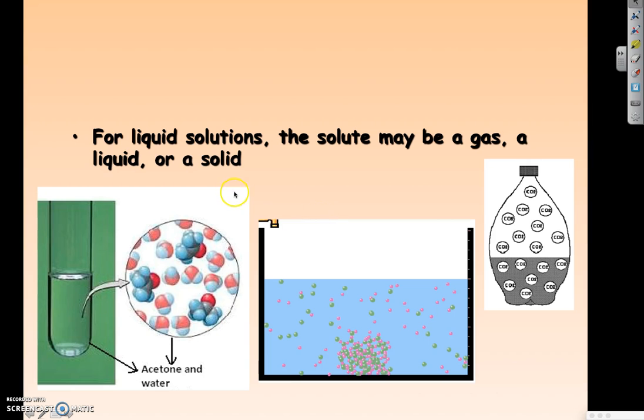It can be a liquid, which would be like this picture over here. Acetone is nail polish remover, and it can be dissolved directly in water. So, you have liquid in liquid. And then, also, you can have a solid. So, you can have salt being dissolved in your liquid. So, any of those can be a solution in a liquid solution.